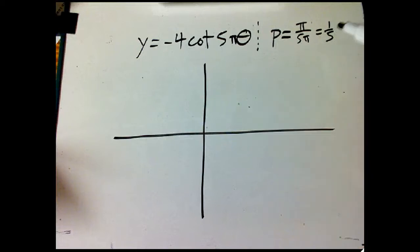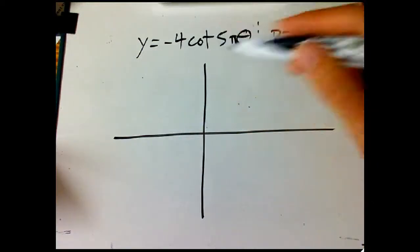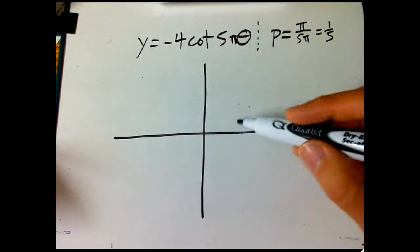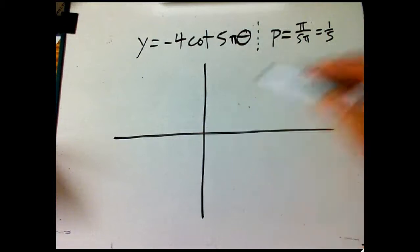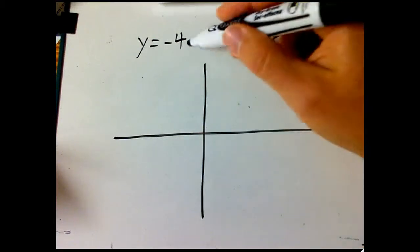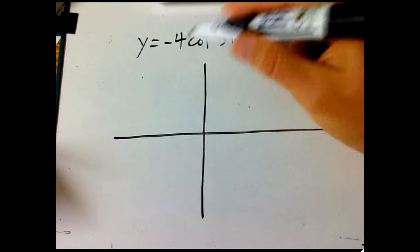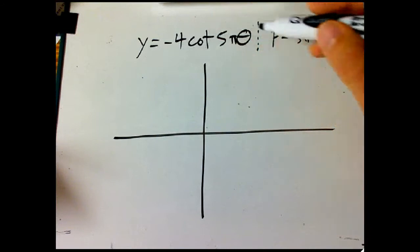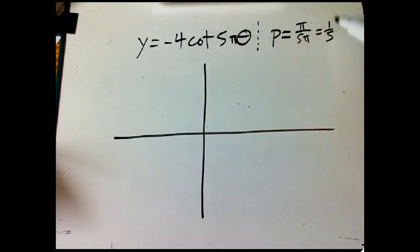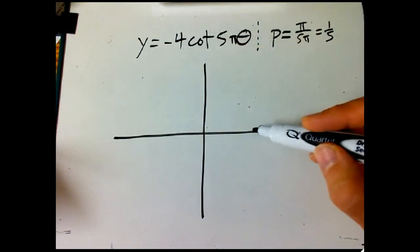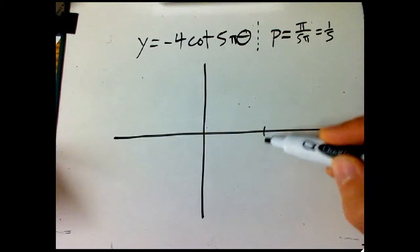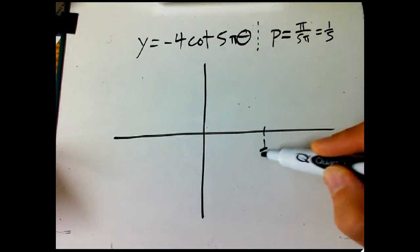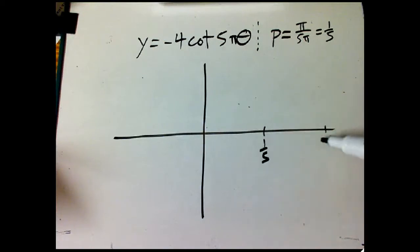That allows us to start marking out our horizontal scale. I'm not going to ask you about shifts on these. Cotangent starts at the axis with an asymptote, and the next asymptote is one whole period away. So let's put one-fifth here and go out to two-fifths in case we want another period.